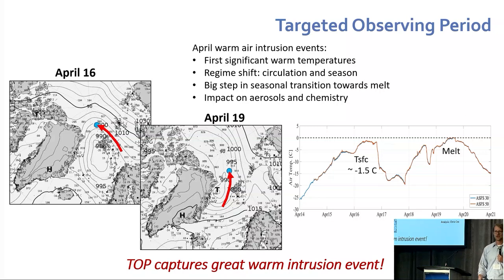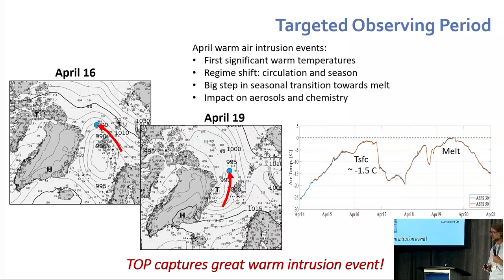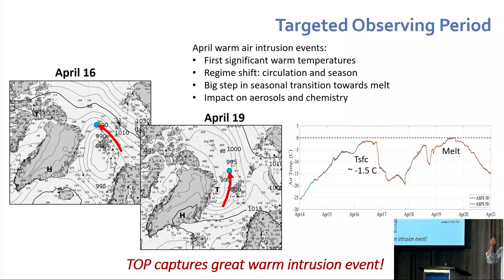Another important implementation aspect is the targeted observing period. I want to applaud PPP and YOP for flexibility here. Initially there were the SOPs, and we had the mission to do them. But we actually wanted to go a little further — we put forward the notion of TOPs and got other sounding stations involved. Nature really cooperated and gave us a tremendous case: a warm air intrusion in the middle of April that really affected the MOSAiC site. It changed the circulation, brought warm air, affected atmospheric chemistry, and started to push the system toward melt onset — a fantastic event the YOP community had the foresight to be ready for.